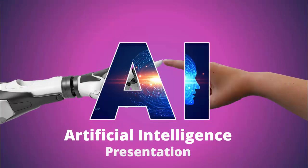You can see here I have got these particular images from the internet — the human hand and this robotic arm. I've added big text called 'AI' where I have used an AI background theme, and then you can add the 'Artificial Intelligence' and 'Presentation' text, or you can just change the text according to your requirement.